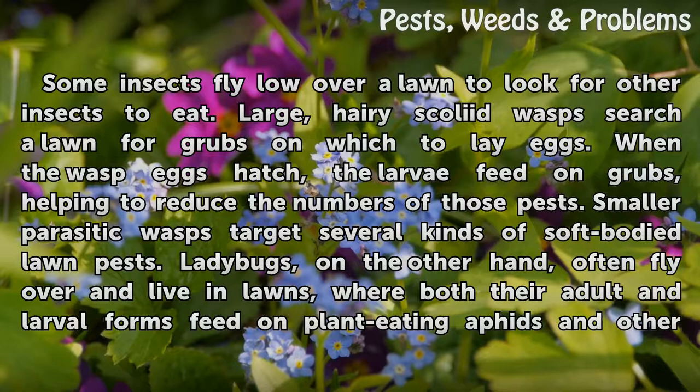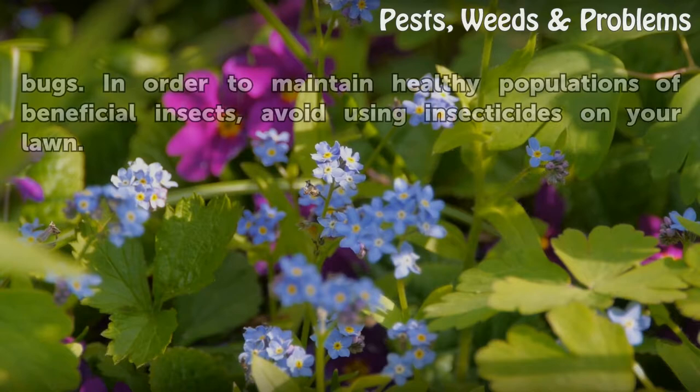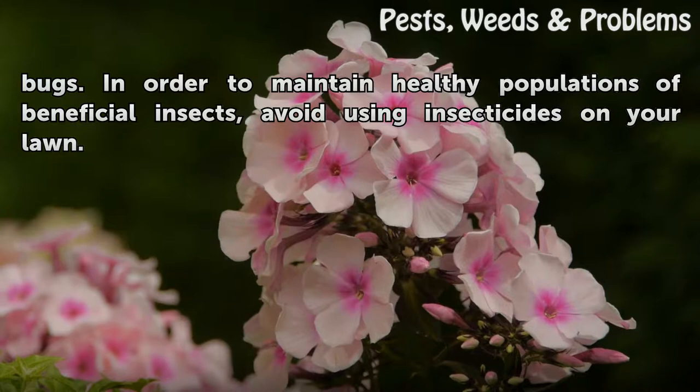Smaller parasitic wasps target several kinds of soft-bodied lawn pests. Lacewing bugs, on the other hand, often fly over and live in lawns, where both their adult and larval forms feed on plant-eating aphids and other bugs. In order to maintain healthy populations of beneficial insects, avoid using insecticides on your lawn.